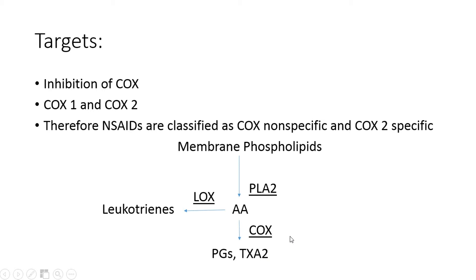In a previous lecture on corticosteroids, they actually acted further upstream on phospholipase A2, inhibiting it and therefore leading to a reduction in prostaglandins and thromboxane A2, but also a reduction in leukotrienes. Corticosteroids also work by inhibiting COX-2, which is an inducible enzyme that we will revisit later in this lecture.